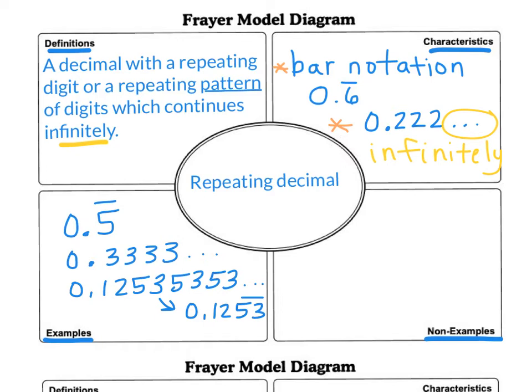Also, a fraction can be a repeating decimal. So one-third as a fraction would become 0.333 repeating. 1 divided by 3 would give us that decimal. So go ahead and write down some examples of repeating decimals.